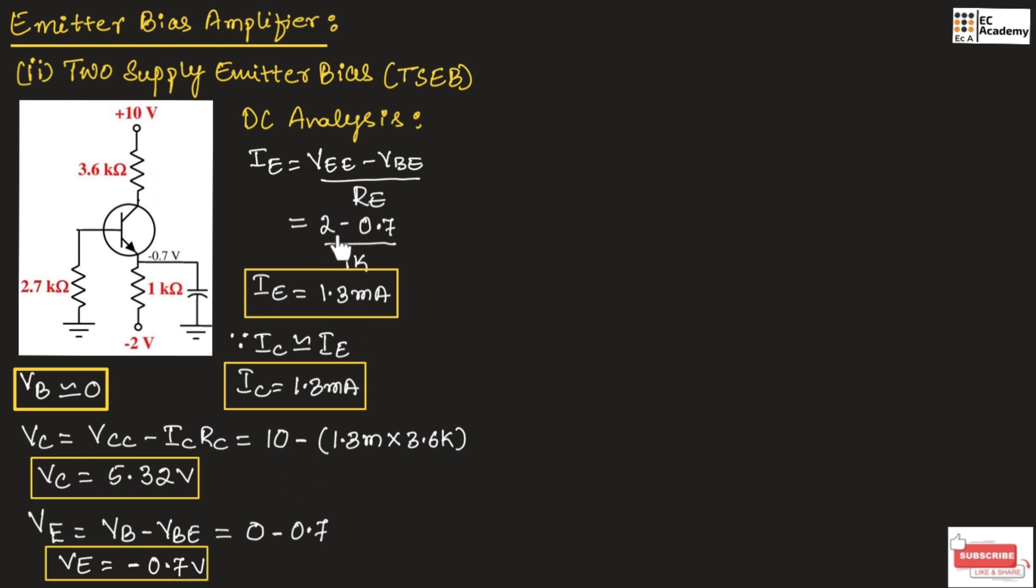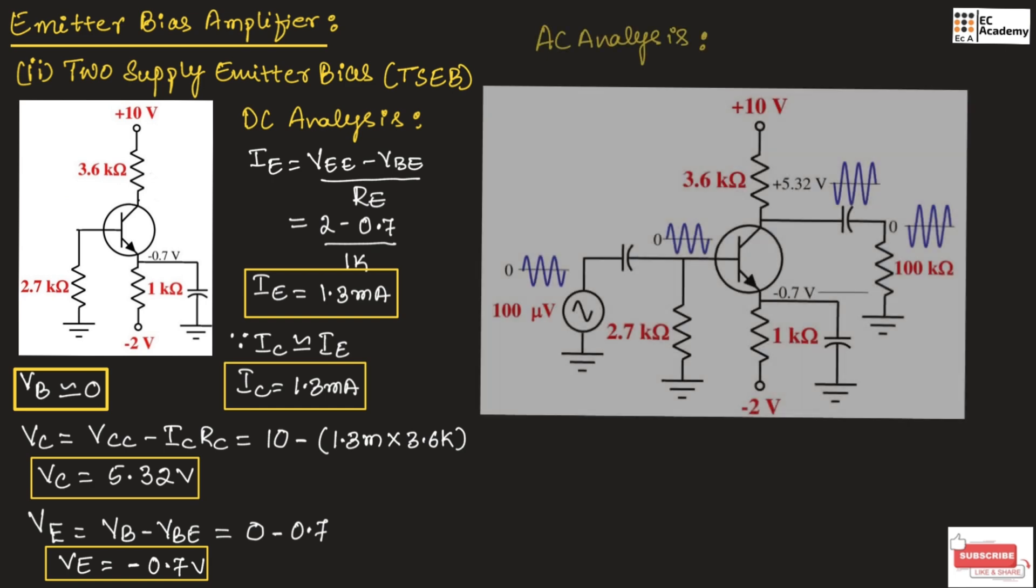This is about DC analysis of two-supply emitter bias configuration. Now, let us understand the AC analysis. To perform the AC analysis, we are connecting capacitors across the input side as well as a capacitor parallel to the emitter resistor.